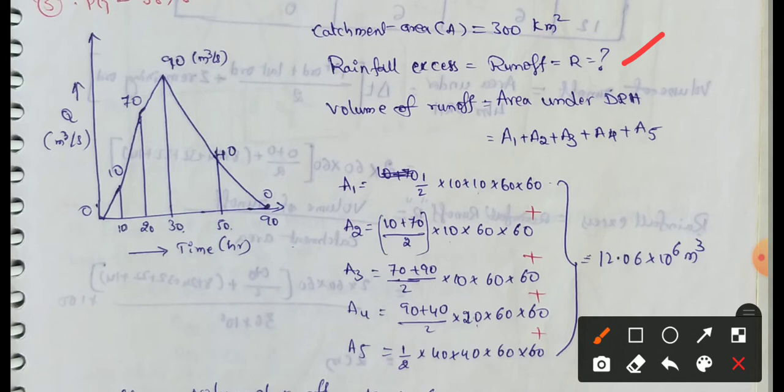First, volume of runoff is equal to area under DRH. Area under DRH means we have 5 areas: 1, 2, 3, 4, 5. So A1 plus A2 plus A3 plus A4 plus A5.